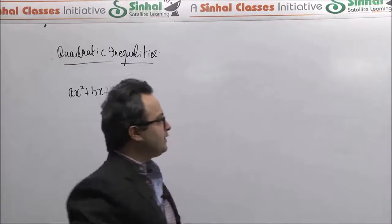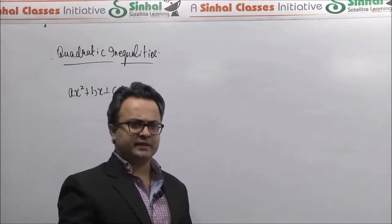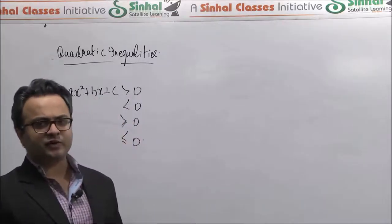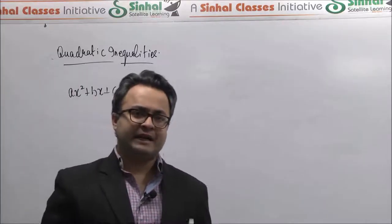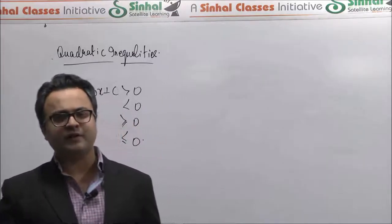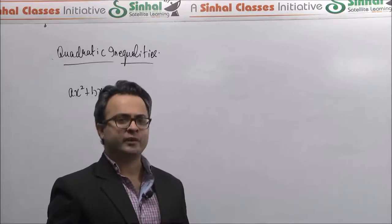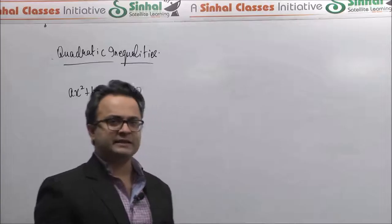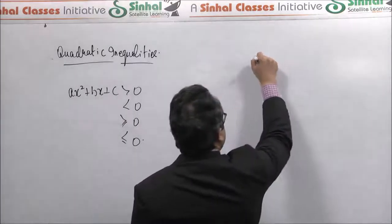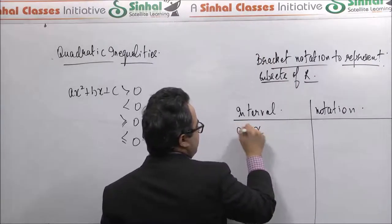Before we get into quadratic inequalities, we just want to look at the bracket notation, which is something you might already be familiar with. Again, as we discussed, when you start solving inequalities you will get intervals — you will get subsets of the set of real numbers. We want to look at the bracket notation that is quite frequently used in expressing these subsets. For example, suppose we have values a and b.